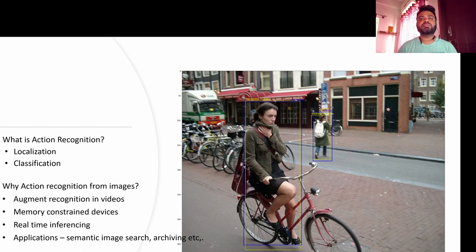There are some specific applications for action recognition from images — for instance, semantic image search, archiving for digital libraries, and so on. With these applications in mind, we believe that action recognition from images is required and it definitely helps in the visual recognition world.